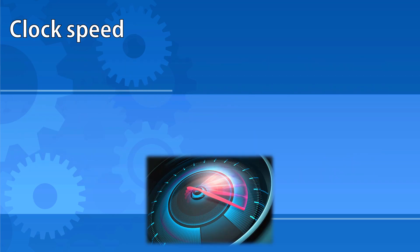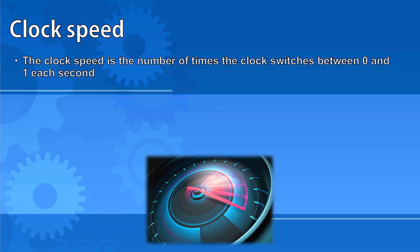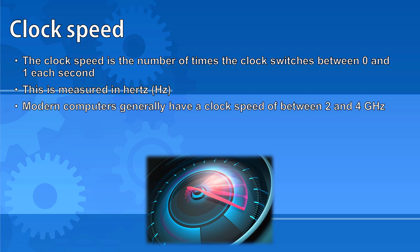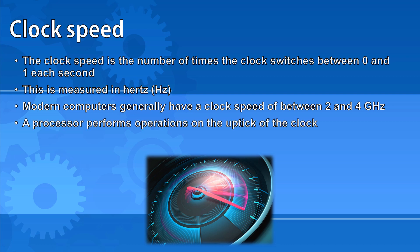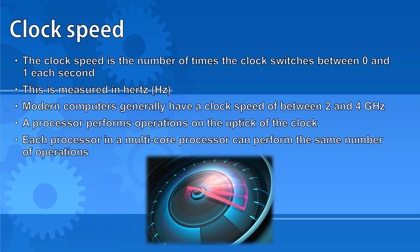The clock speed is the number of times the clock switches between 0 and 1 each second, measured in hertz. Most modern computers have a clock speed between 2 and 4 gigahertz. The processor performs its operations on the uptick of the clock. Each processor in a multi-core processor can perform the same number of operations, so a quad-core processor running at 2 gigahertz can actually perform 8 gigahertz worth of instructions.